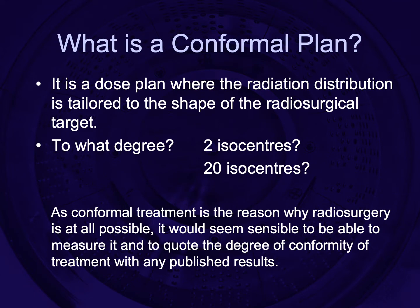First of all, I'd like to ask: what is a conformal plan? It's a dose plan where the radiation distribution is tailored to the shape of the radiosurgical target. But to what degree? In the old days, maybe 20 years ago with Gamma Knife, we talked about conformal treatment plans. What one centre said was conformal might use just two isocentres while another centre might use 20. As conformal treatment is the reason why radiosurgery is at all possible, it would seem sensible to be able to measure it and quote the degree of conformity with any published results.